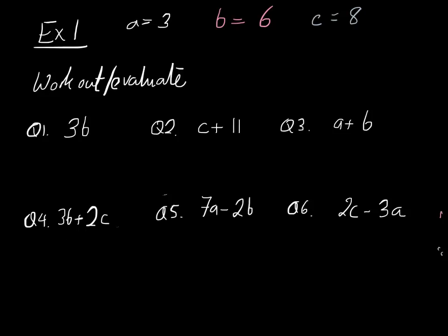So here's example 1. It tells us that a is going to be equal to 3, b is going to be equal to 6 and c is going to be equal to 8. And we want to work out or evaluate, evaluate is another word for work out in maths, the following 6 things. So 3b, c plus 11, a plus b, 3b plus 2c, 7a subtract 2b and 2c subtract 3a.